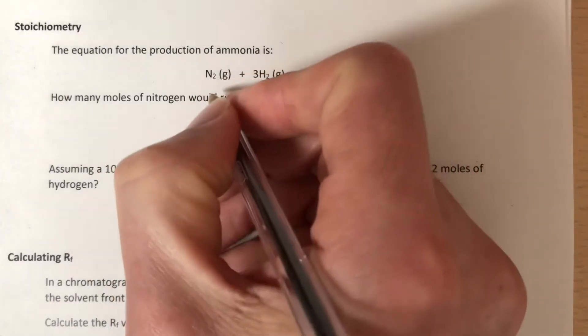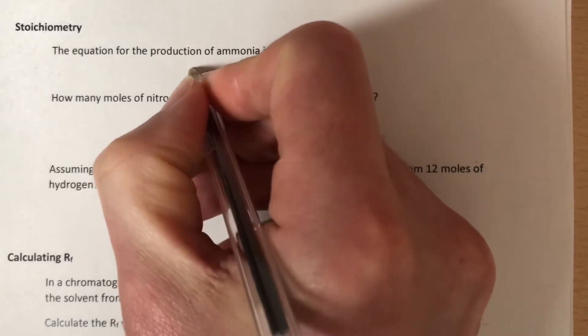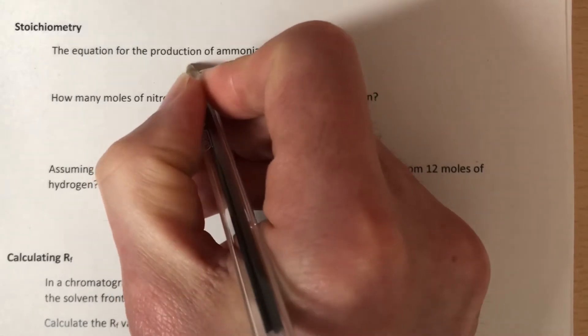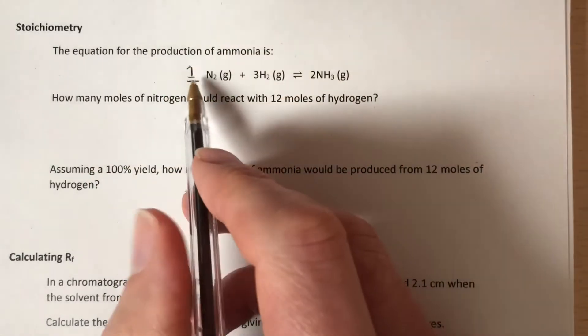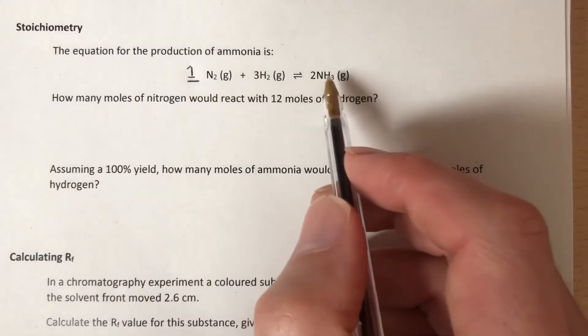The stoichiometry is the big numbers before the substances. Now there's no big number before the nitrogen there, so there is a one. So what the stoichiometry of this equation tells us is one mole of nitrogen reacts with three moles of hydrogen to make two moles of ammonia.